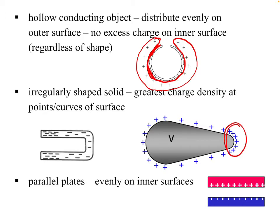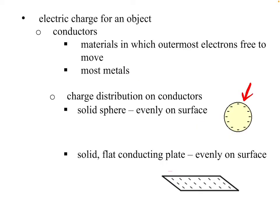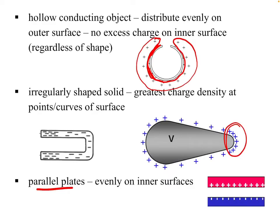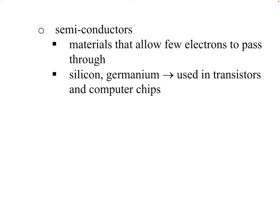For parallel plates — which we'll get into more later in the unit — that's one positively charged plate and one negatively charged plate. This is basically like a solid flat conducting plate, except the charge is evenly on the inner surfaces. The reason it's on the inner surfaces is that one plate is positive and one is negative, so they're trying to get as close to each other as possible.